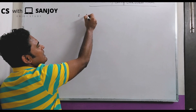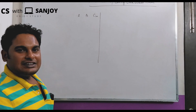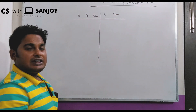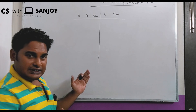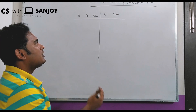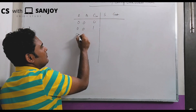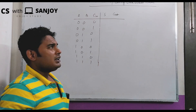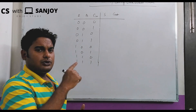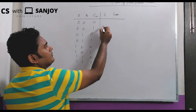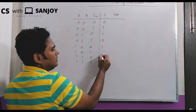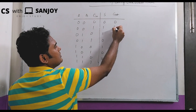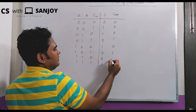We consider inputs A, B, and C_in (carry in), with outputs sum and carry out. From the truth table, taking inputs 0-0-0, 0-0-1, 0-1-0, 0-1-1, 1-0-0, 1-0-1, 1-1-0, 1-1-1, the sum outputs are 0, 1, 1, 0, 1, 0, 0, 1.